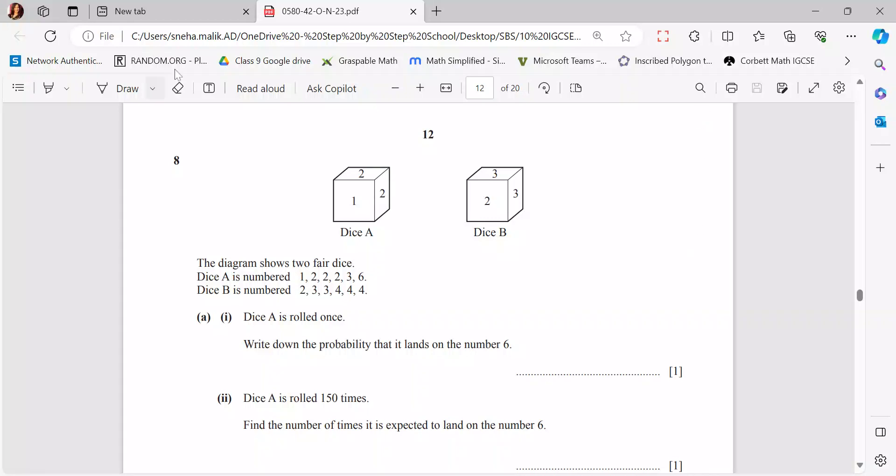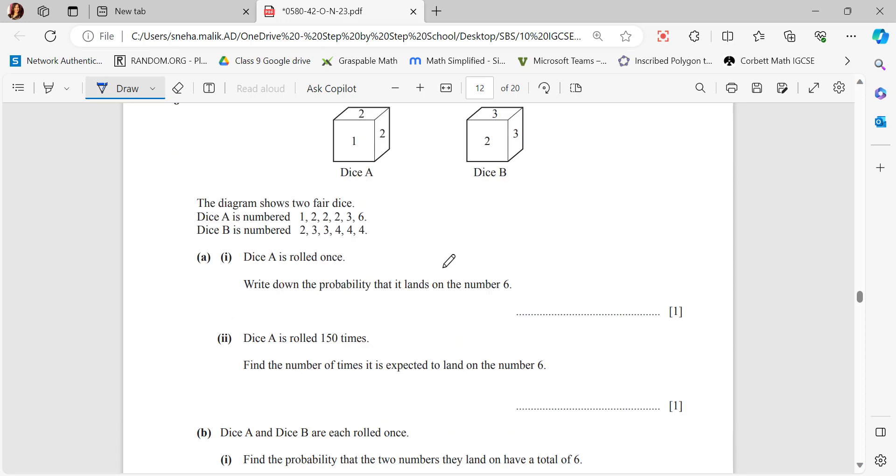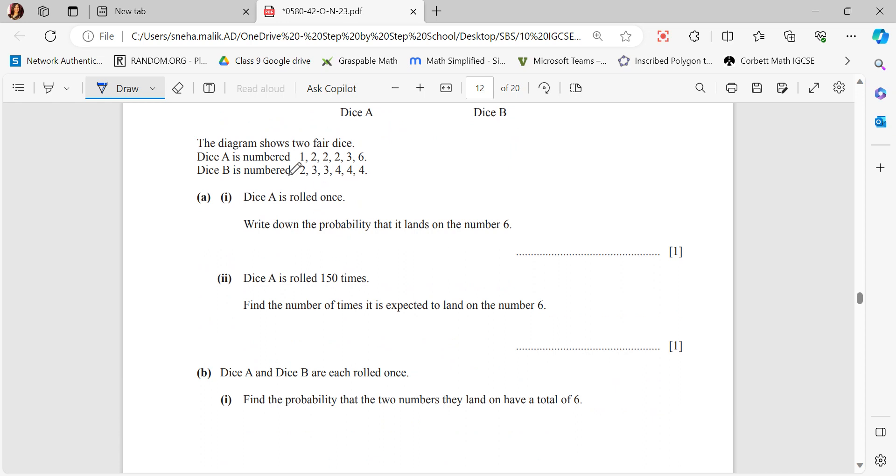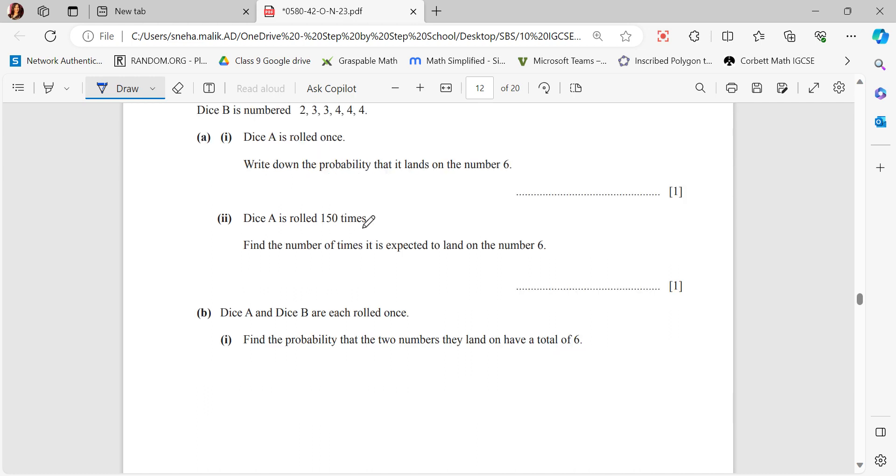We are going to solve question number 8 from the October-November 2023 series, paper 0580, paper 4. This question is on probability. The diagram shows two fair dice. Dice A is numbered 1, 2, 2, 2, 3, 6 and dice B is numbered 2, 3, 3, 4, 4, 4.